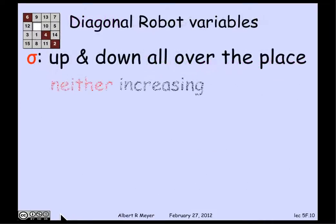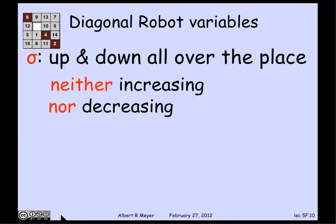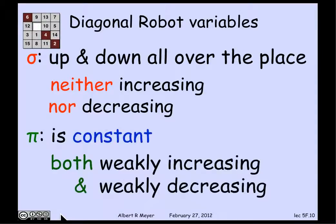If we looked at the example of sigma, the sum of the coordinates, that's up and down all over the place. It's neither increasing nor decreasing. The other extreme is the parity variable pi, which was 0 or 1 according to whether or not the sum of the coordinates was even or odd. And pi is a constant. That means it's both weakly increasing and weakly decreasing in the degenerate sense that weakly increasing is allowed to stay the same. In fact, something is weakly increasing and weakly decreasing, if and only if it's a constant.